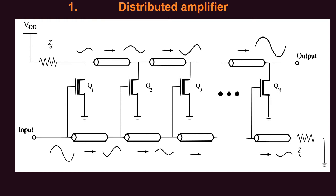The first amplifier we will talk about for 5G wireless communication systems is the distributed amplifier. The distributed amplifier consists of N number of transistors — for example, assume we have three transistors Q1, Q2, and Q3. On the top of those transistors the drain lines are connected with different sections of transmission lines. These transmission lines are also connected at the bottom with the gate lines. We have transmission line sections on the top and on the bottom. The transmission line model is an LC-LC-LC-L sort of circuit.